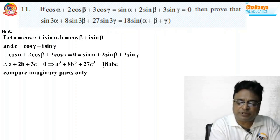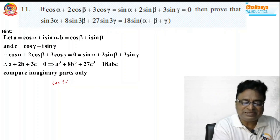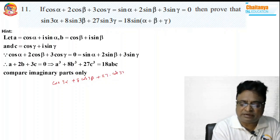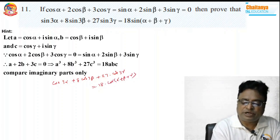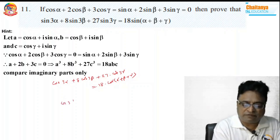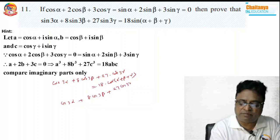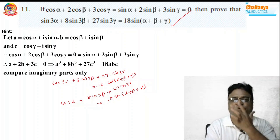As usual, just like in the previous problem, I take A = cis α, B = cis β, C = cis γ. Then cos α + 2cos β + 3cos γ = 0 and sin α + 2sin β + 3sin γ = 0, therefore A + 2B + 3C = 0. Whenever A + B + C = 0, A³ + B³ + C³ = 3ABC. So A³ = cis 3α, then cis 3α + 8·cis 3β + 27·cis 3γ = 18·cis(α + β + γ). Equate real and imaginary parts: cos 3α + 8cos 3β + 27cos 3γ = 18cos(α + β + γ). Similarly equating the imaginary part gives the sine result. This is about the 11th problem.